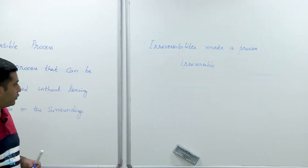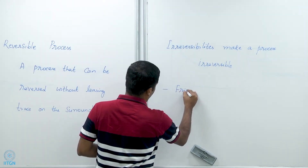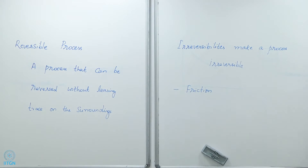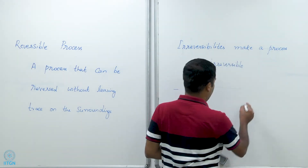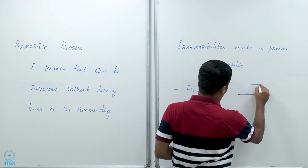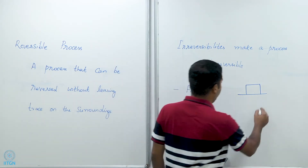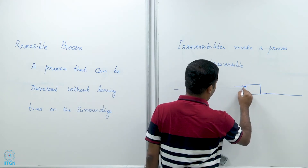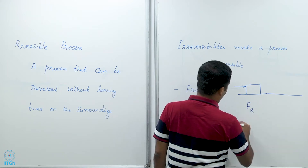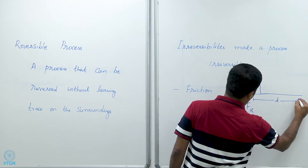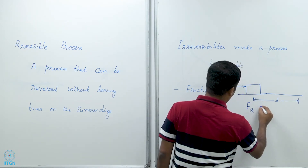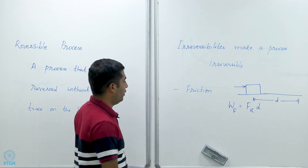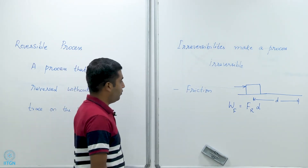One common cause of irreversibility is friction. Consider a surface and an object with a normal reaction between them. You have to do work to move this object. If the frictional force is F_R and you move it along a distance D, then the work done against friction is W_friction = F_R × D.